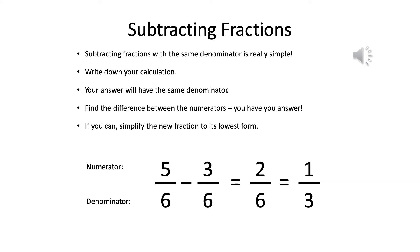So we just look at the numerator, the top number, just as we did in addition yesterday. And we just do five take away three or five subtract three. That leaves us with two. And then that's just two sixths.